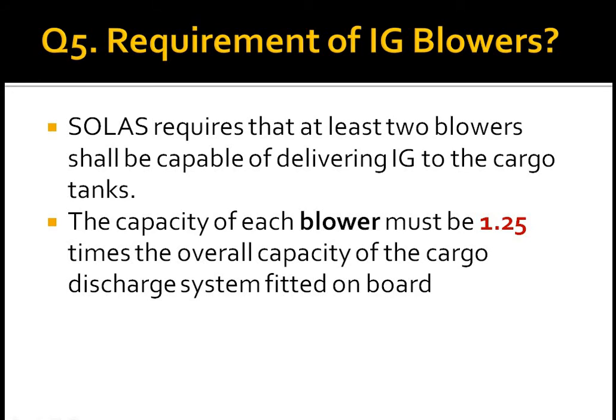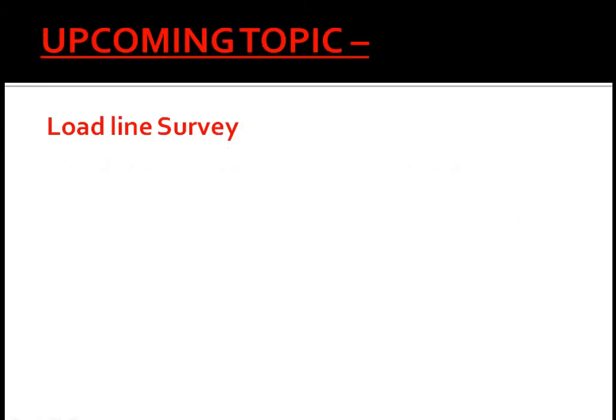Question 5: requirements of IG blowers. SOLAS requires that at least two blowers shall be capable of delivering inert gas to the cargo tanks. The capacity of each blower must be 1.25 times the overall capacity of the cargo discharge system fitted on board.